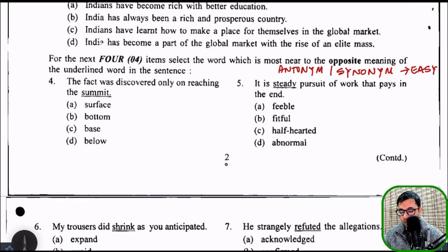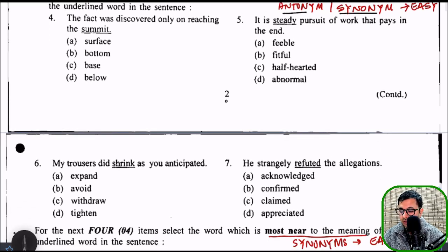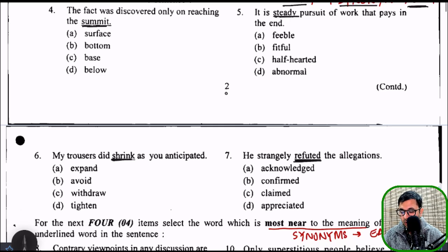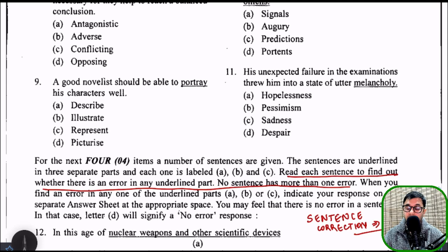There were three questions from one RC in 2012. After that, there were four questions from antonyms and synonyms, which were again of an easy level. Words like 'summit', 'steady', 'shrink', 'refuted' — how many easy terms were picked up. That shows that the question paper, especially with respect to English, was not difficult at all. There were four questions from antonyms and four from synonyms — 8 questions total, which is a big number out of 100. That means English has a weightage of about 10%, which is a lot.